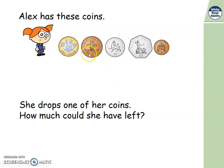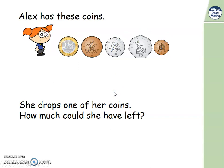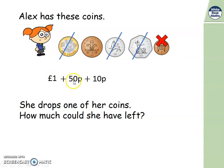What should I try next? We've tried the pound, the 2p, the 10p — let's try dropping the 50p. Now she has 1 pound; next highest value is 10 pence — 1 pound 10, add 2 — 1 pound 12, add 1 — that's 1 pound 13 pence. The last one: drop the 1 pence. She has 1 pound, add 50 pence — 1 pound 50, add 10 pence — 1 pound 60, add 2 pence — 1 pound 62. And now we know we found all the possibilities.